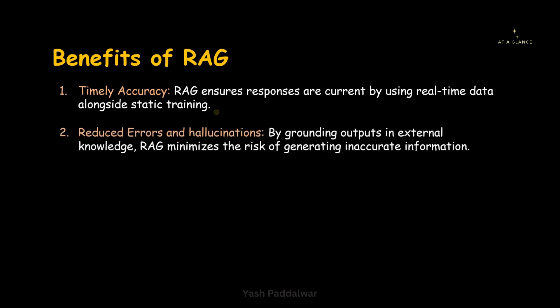The second benefit of RAG is reduced errors and hallucinations. By grounding outputs in external knowledge, RAG minimizes the risk of inaccurate information. This is done with the help of instructions provided at the augmentation stage. Hallucination is a problem in large language models — they sometimes generate information which is fake and does not exist. The usage of RAG can reduce this hallucination to a great extent.